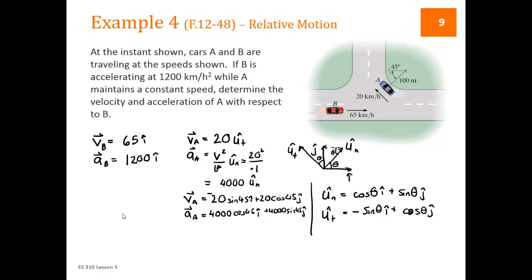Now we're looking for velocity and acceleration of A with respect to B. So velocity of A with respect to B is VA minus VB. All of these are vectors. Acceleration of A with respect to B is AA minus AB. Both vectors.